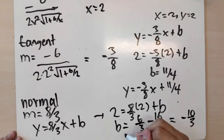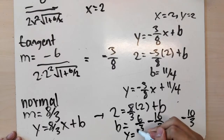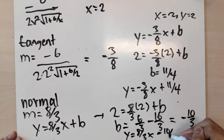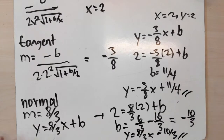So the line of the normal is y equals 8 over 3 times x minus 10 over 3.